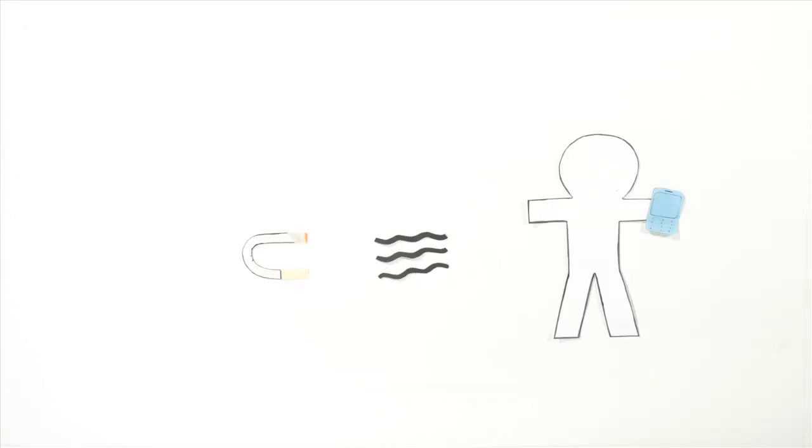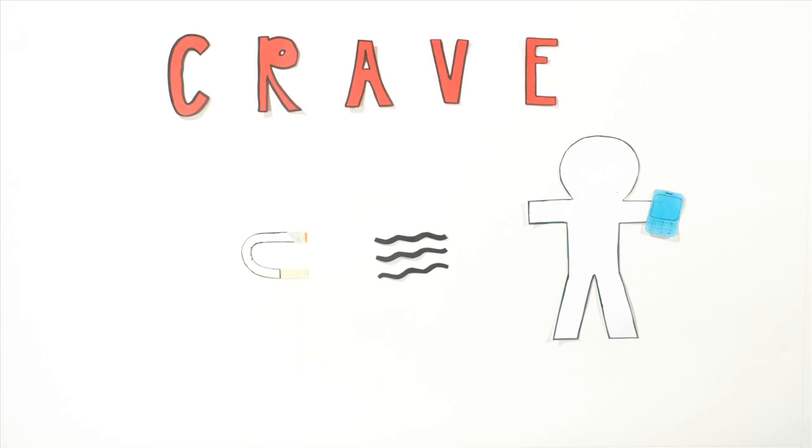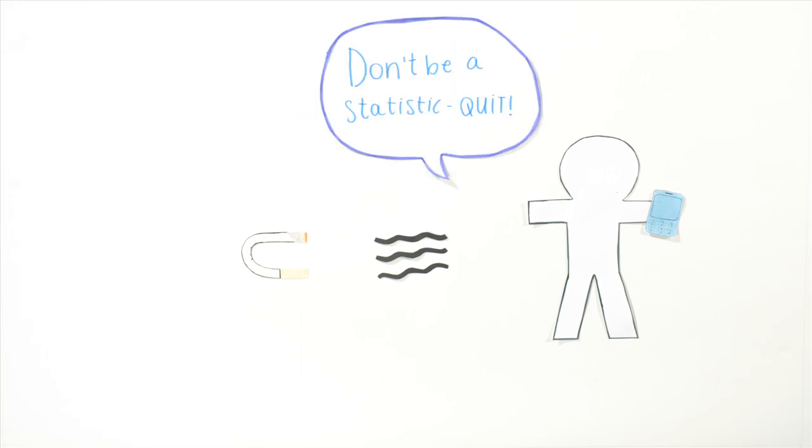This is Juan. Juan is addicted to cigarettes. When he needs tobacco, he texts CRAVE. Instantly, he gets reminded why he shouldn't smoke.